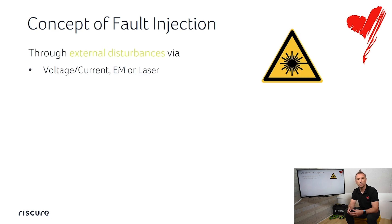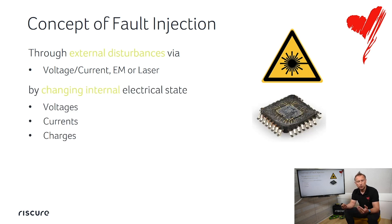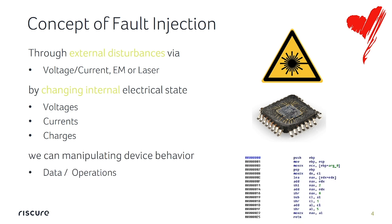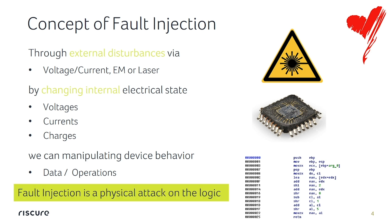The concept of fault injection is that through an external disturbance — like voltage, EM, or power — you change the internal state of a system through voltages, current, and charges, which have an effect on data operations. In other words, through an external disturbance we manipulate the logic. That's why we say fault injection is a physical attack on the logic.